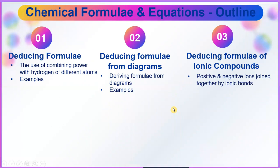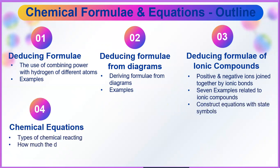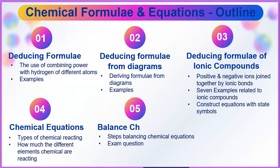Our study outline consists of: deducing formula, described about the use of combining power with hydrogen of different atoms, and a few examples; deducing formula from diagram, which is deriving formula from diagram and example; deducing formula of ionic compound, described about the positive and negative ions joined together by ionic bond, seven examples related to ionic compound; construct equation with state symbol, chemical equation, which describes about the type of chemical reactants, how much the different element chemicals are reacting, and finally, balance chemical equation, step balancing chemical equation, and exam question.